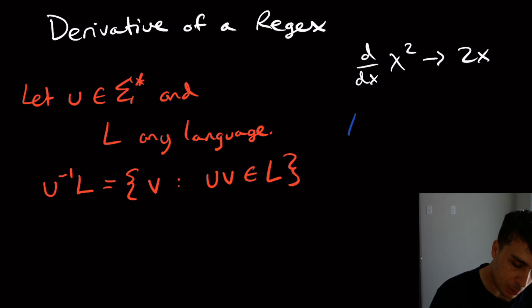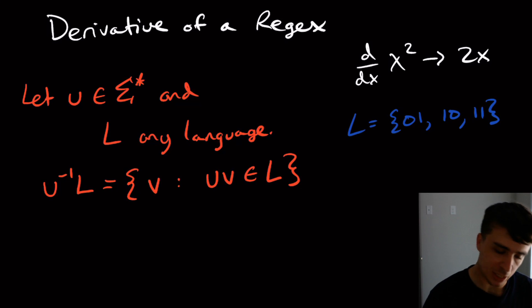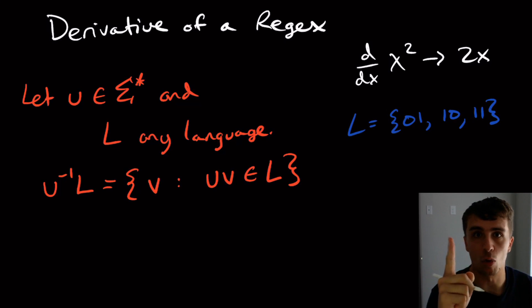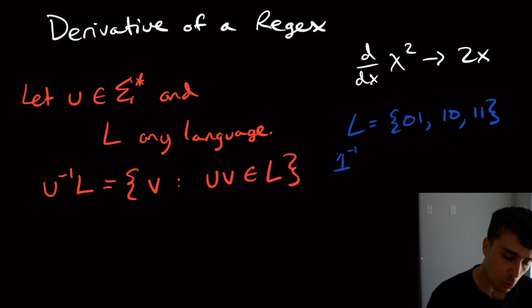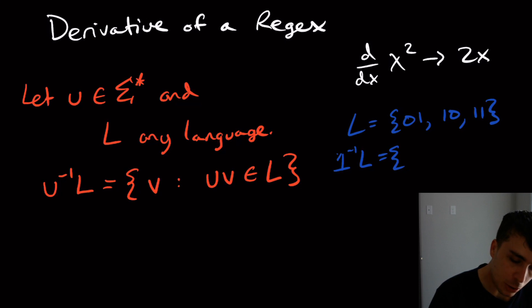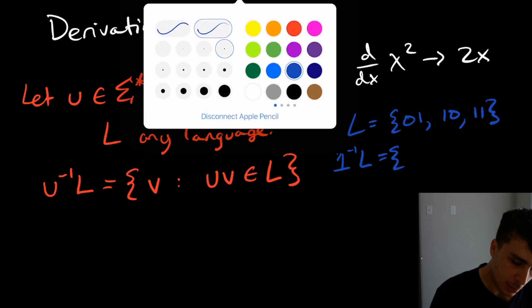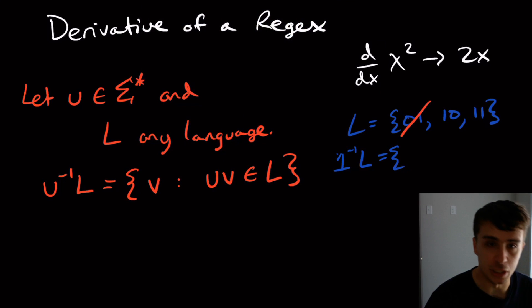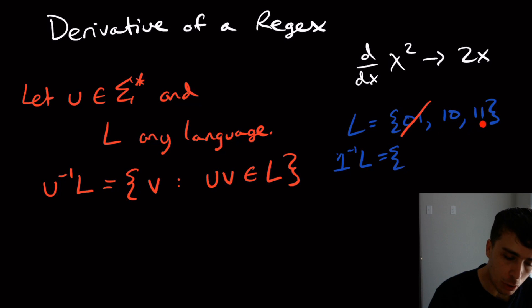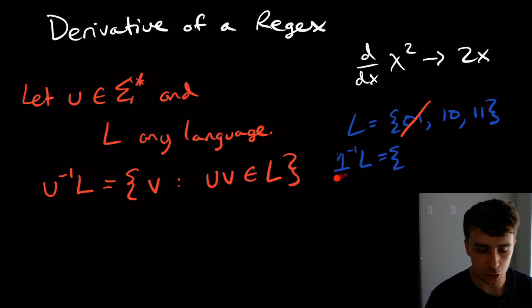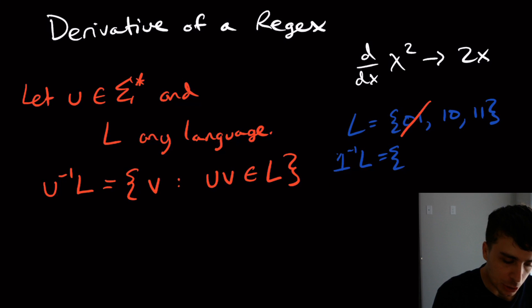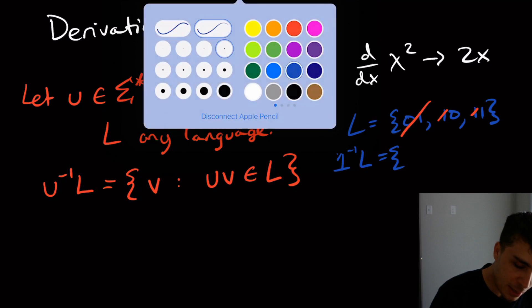Just as an example: suppose that L was {01, 10, 11}. Then what we can do is, if u is equal to the string 1 — just a single 1 — then 1 to the minus 1 of L is going to be: get every single string in this language that starts with 1. So I'm not going to choose 01. I am going to choose 10 and 11. But I'm going to take away the string I'm taking the derivative of, which is a 1 in this case. So I'm going to take this 1 away at the beginning of each. What I'm left with is {0, 1}.